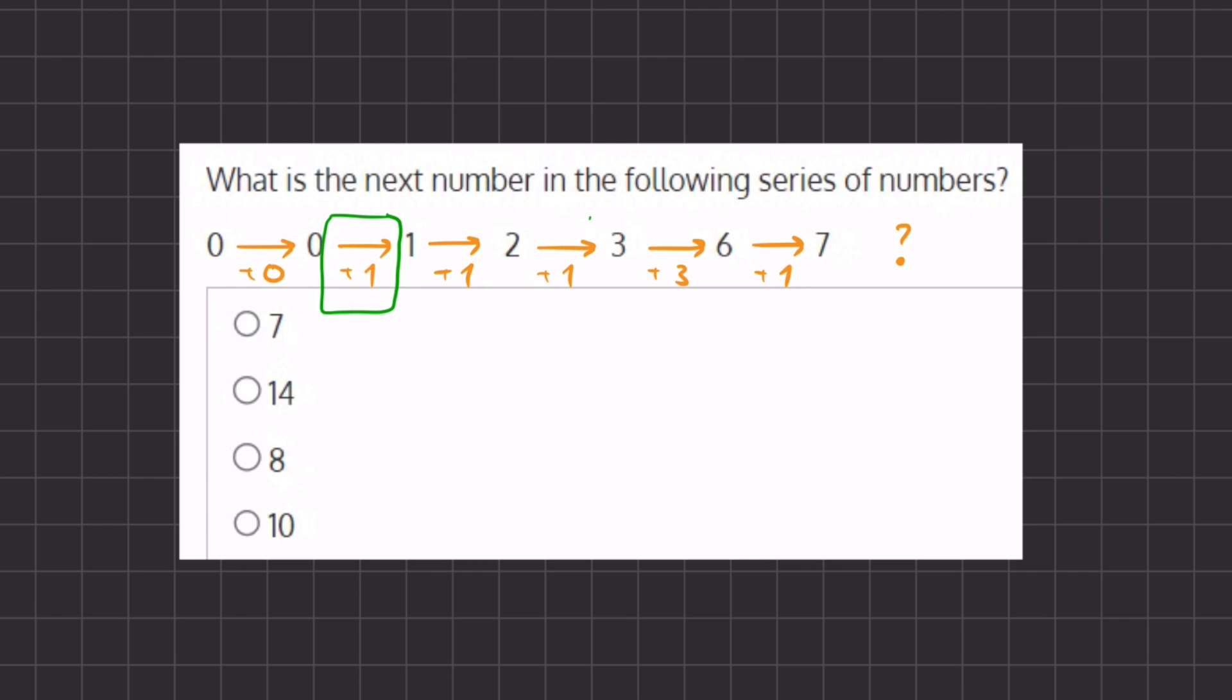We also cannot get from 2 to 3 with a simple transition, and also from 6 to 7. Therefore, the transitions in between should change to something more consistent for our pattern.